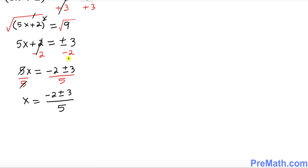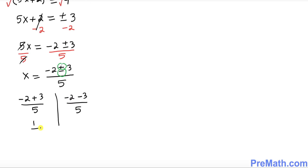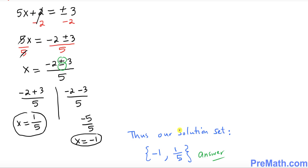Now we split along the plus and minus signs. The first solution is negative 2 plus 3 over 5, which gives 1 over 5. The second is negative 2 minus 3 over 5, giving negative 5 over 5, so x equals negative 1. Thus our solution set is negative 1 and one fifth.